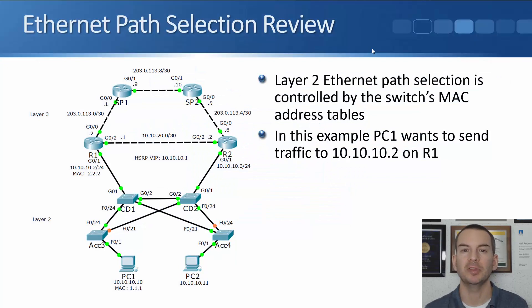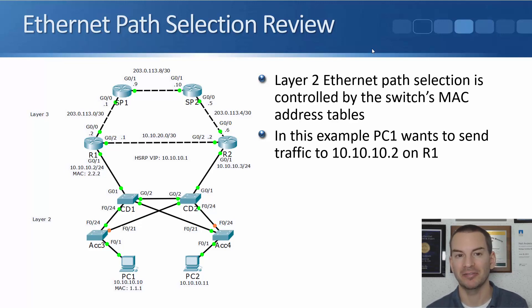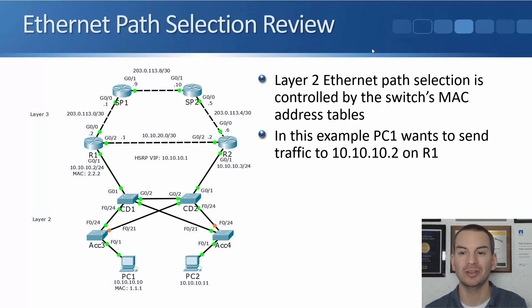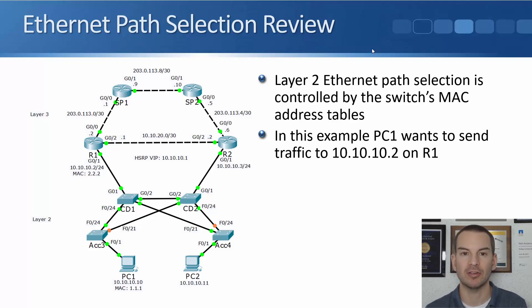In this lecture, you'll learn why we have the Spanning Tree protocol. And to understand why we need to have it, I need to first start off with a review of Ethernet path selection. We've got our example network topology on the left hand side here, and our Layer 2 Ethernet path selection is controlled by the switch's MAC address tables. Let's see how those are built and how it works.